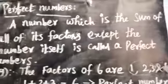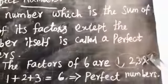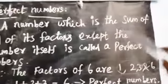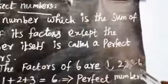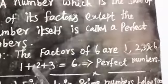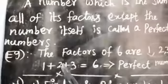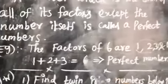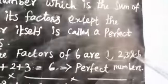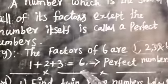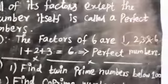Excluding the number itself, we add: 1 plus 2 plus 3. 1 plus 2 equals 3, and 3 plus 3 equals 6. So it comes to 6, and 6 is a perfect number.